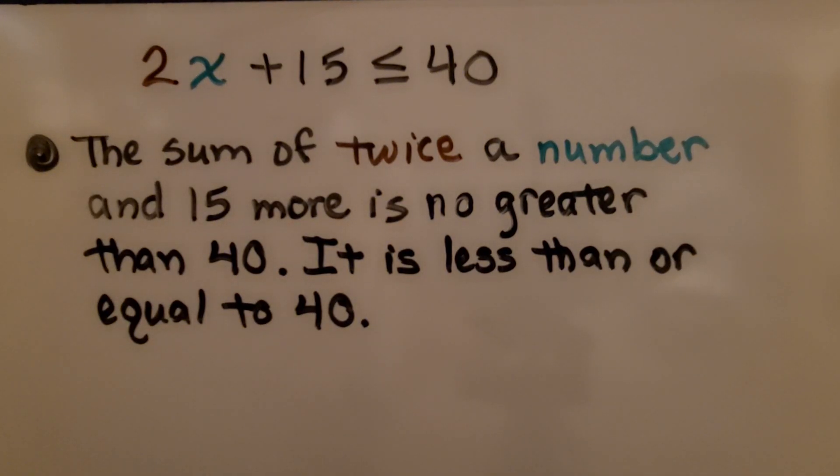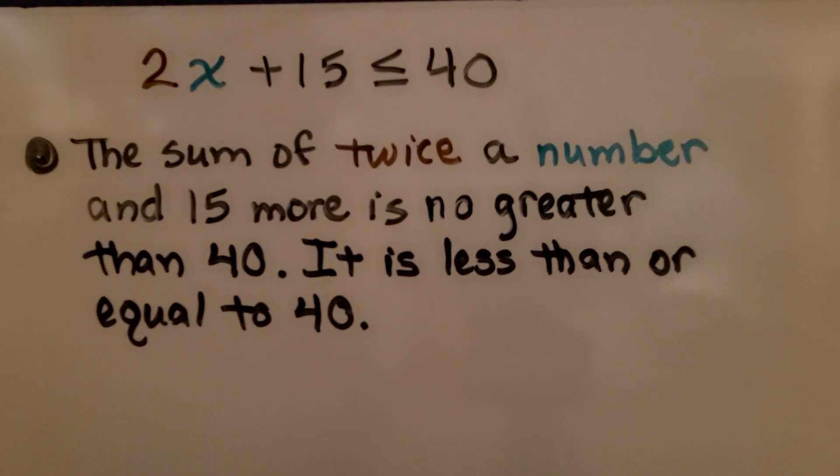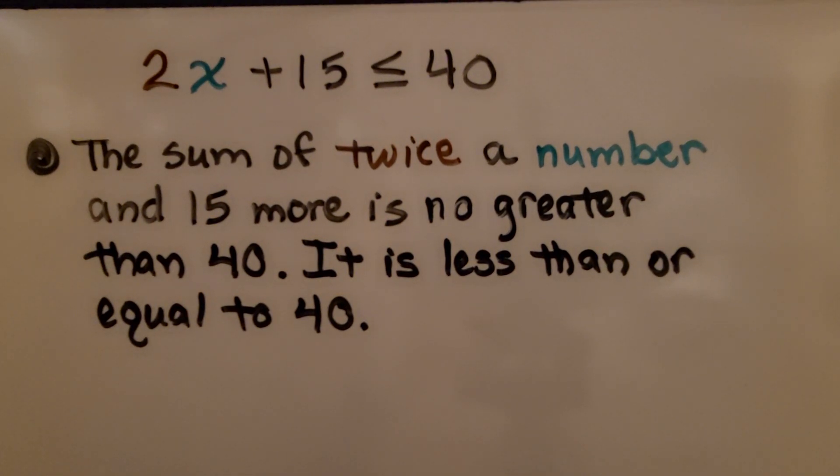The sum of twice a number and 15 more is no greater than 40. It is less than or equal to 40.